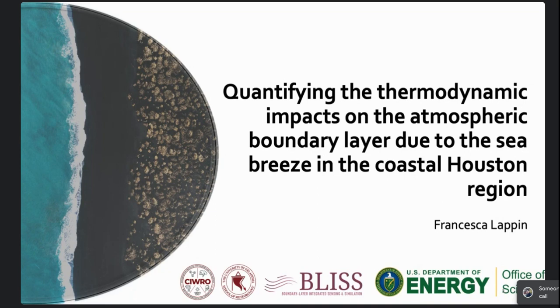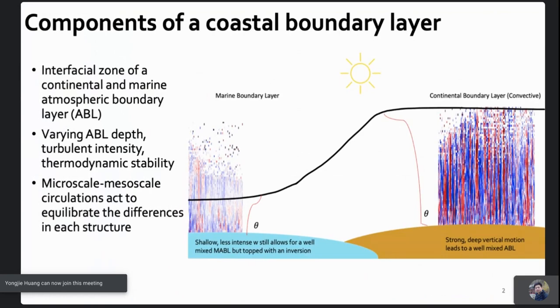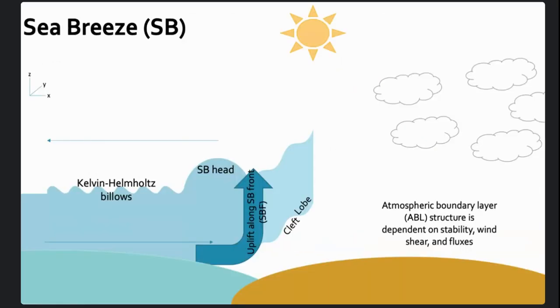Today, we will be once again looking at the Tracer project and mostly the thermodynamic impacts as a result of the sea breeze, starting with looking at what is our coastal boundary layer and what makes it unique. She's special because she's an interfacial zone between a continental boundary layer and a marine boundary layer, and they vary in their degrees of turbulent intensity, depth, and thermodynamic stability. Because they are at different temperatures due to land heating up a lot faster than the water, a lot of times there are microscale and mesoscale circulations that set up to equilibrate these differences. And that's how we get our sea breeze.